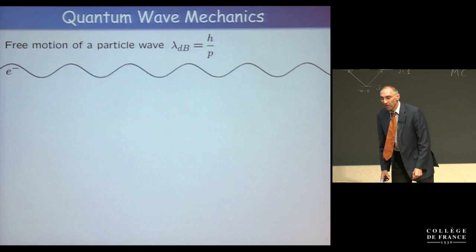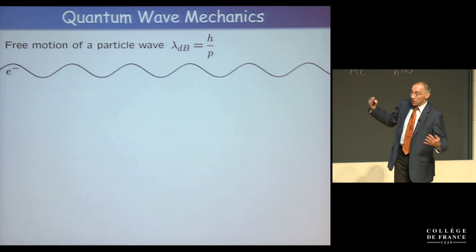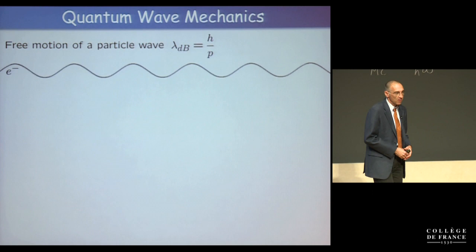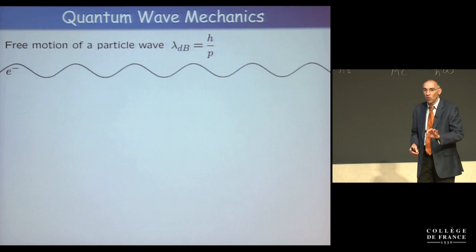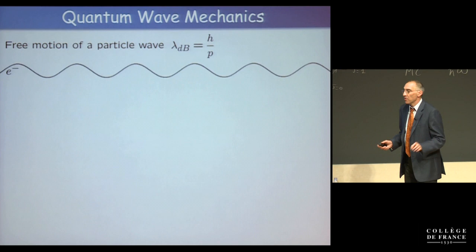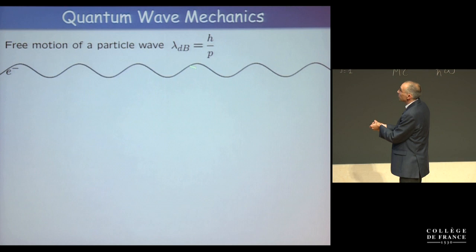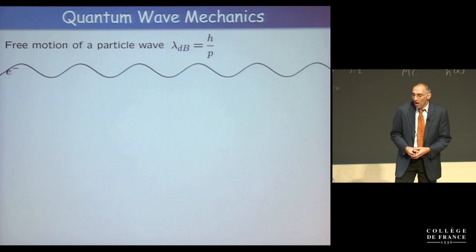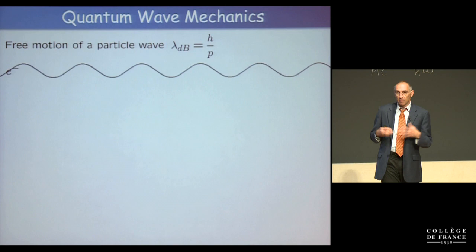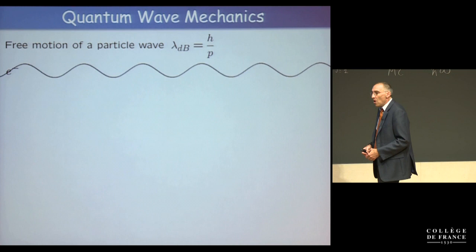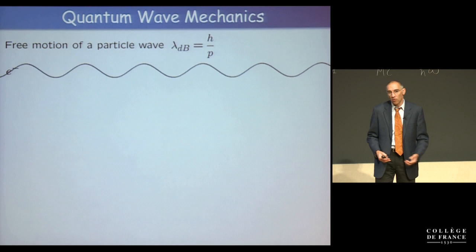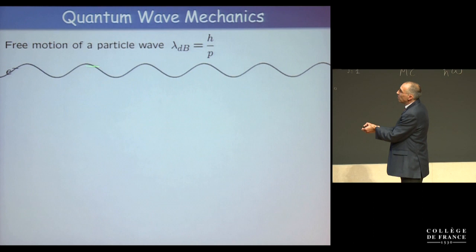Classical physics gives no reason for the observed quantized orbits. The solution came roughly 100 years ago with Bohr and de Broglie: matter also has wave properties. We describe the electron not as a trajectory but as a wave with a certain de Broglie wavelength, inversely proportional to the momentum. The meaning of this wave is still debated today — one can think of it as a density of charge or matter, or as a probability of finding the atom somewhere.